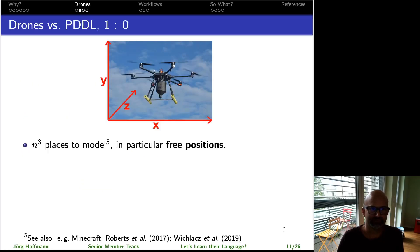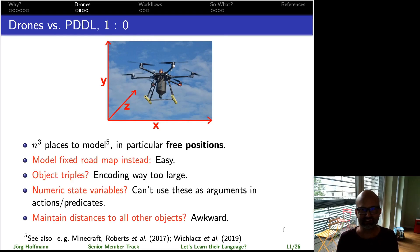Which brings me to the following problem. First, the space is three-dimensional, as we all know. So even if it's a discrete space, you got n to the three places to model. How do you do this? Well, if I just fix the roadmap in the sky, then everything's fine, but that's pretty limited. Otherwise, if I model each 3D position by an object triple, the encoding just explodes. This has been demonstrated in various contexts.